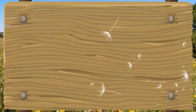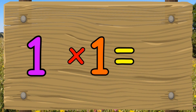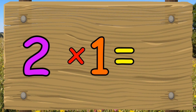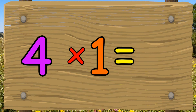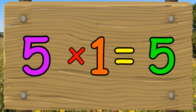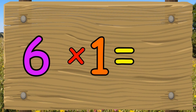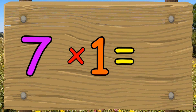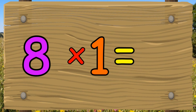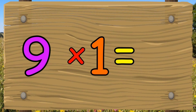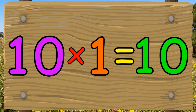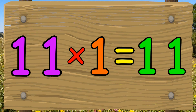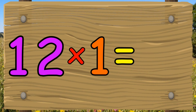Let's try the 1 times table one more time. 1 times 1 equals 1. 2 times 1 equals 2. 9 times 1 equals 9. 10 times 1 equals 10. 11 times 1 equals 11. 12 times 1 equals 12.